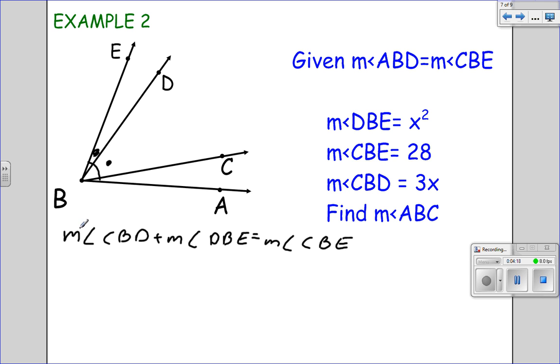And then just plug in. CBD is 3x plus x squared equals 28. Now we need this in standard form, so we need to move the 28 over with the x squared first. So x squared plus 3x minus 28 equals 0.